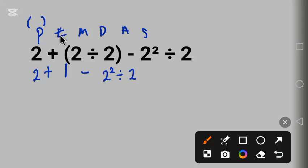Next is exponent, E. Exponent is something like this, let's say 2 raised to power 3. Is it in this question? Yes. And then what is the meaning of this 2 raised to power 2? It means we have 2 times 2, and that will give us 4. Now let's do it here: we have 2 plus 1 minus 2 square gives us 4 divide by 2.